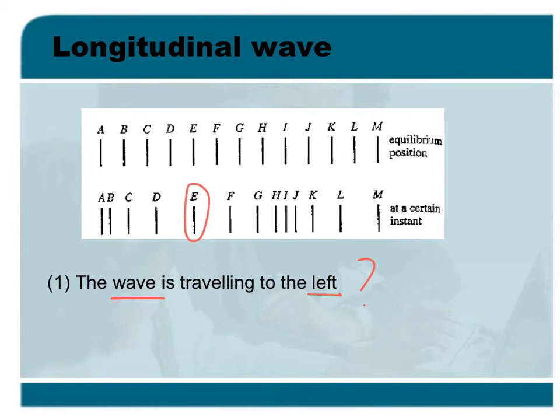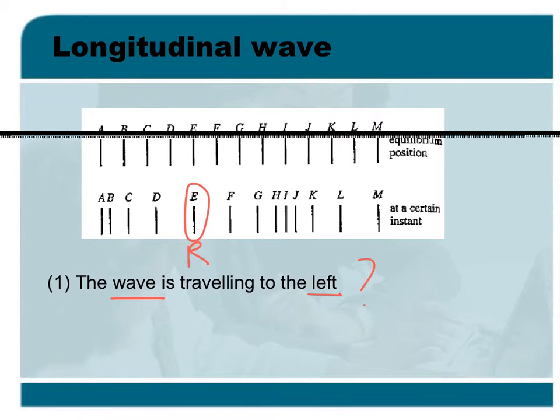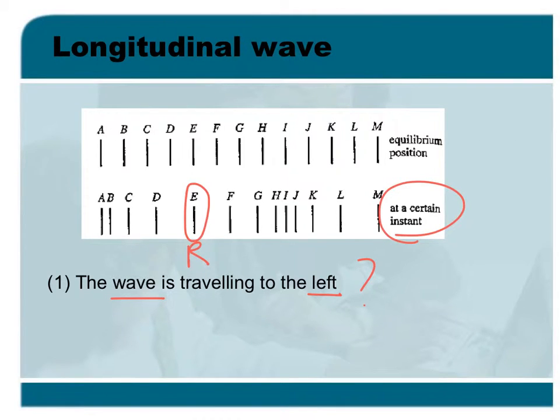We have to look at the rarefaction center first. Now for example at E, E is the rarefaction center. Now, when the wave is traveling to the left, that means later D will be the rarefaction center. That means D would have to move to the right in order to be the rarefaction center later.